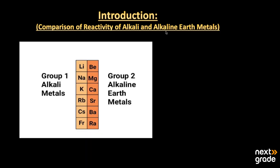The topic we are going to discuss is the comparison of reactivity of alkali and alkaline earth metals. We will talk about Group 1a and Group 2a metals. Group 1a is called alkali metals and includes lithium, sodium, potassium, rubidium, cesium, and francium. Group 2a is called alkaline earth metals and includes beryllium, magnesium, calcium, strontium, barium, and radium.